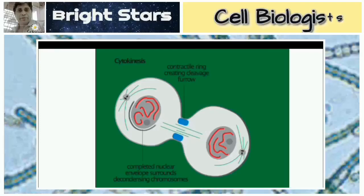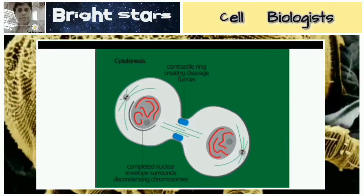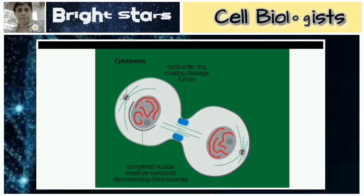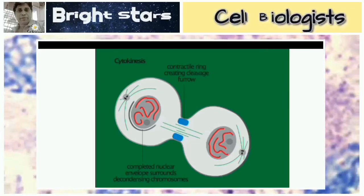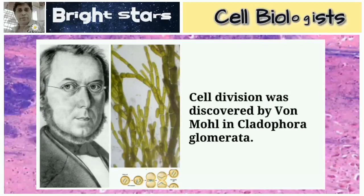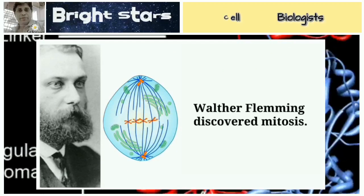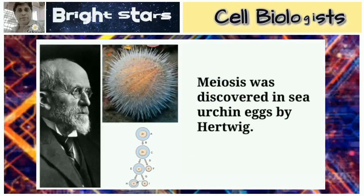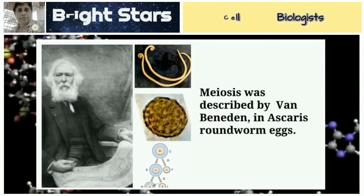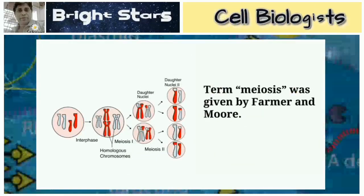Cell division is the process of splitting of the parent cell into two or four daughter cells, of two types: mitosis and meiosis. Cell division was discovered by Strasburger in Cladophora glomerata. Walther Flemming discovered mitosis. Meiosis was discovered in Ascaris by Hertwig, described by Van Beneden in Ascaris roundworm. The term 'meiosis' was given by Farmer and Moore.